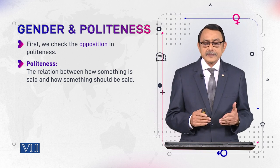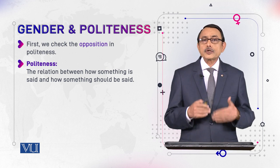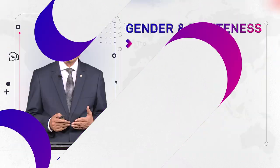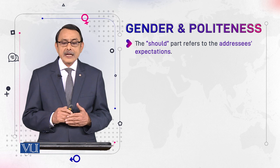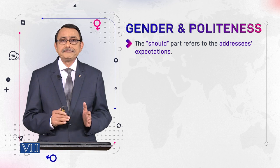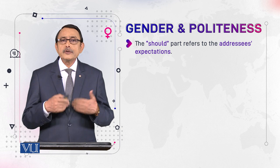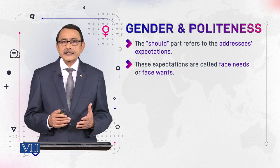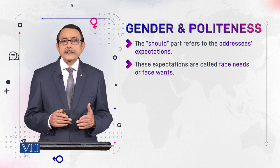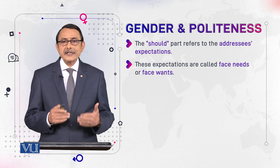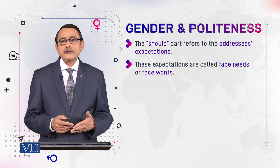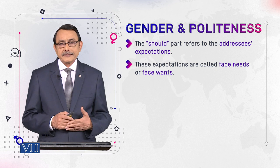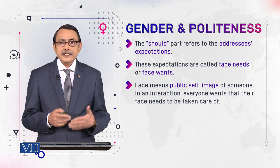Politeness is the relationship between how something is said and how something should be said. This relationship is called politeness in terms of linguistics. The 'should' part of this definition refers to the addressee's expectations, because the addressee expects that an utterance should be expressed in a certain way. These expectations are called face needs or face wants. We are talking about what the addressee expects from the speaker — those expectations are called face needs.